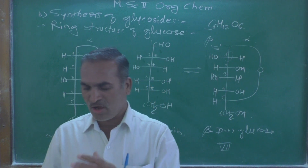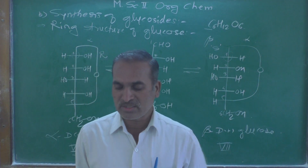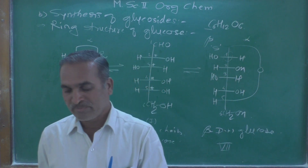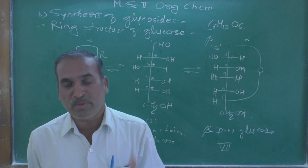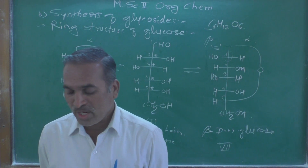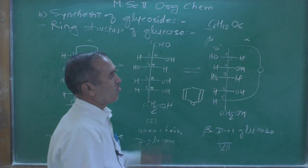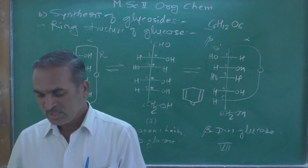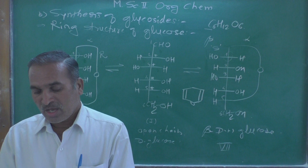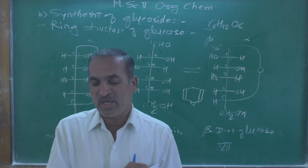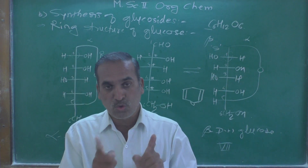The ring of the cyclic structure of glucose contains five carbons and one oxygen, thus it is a six-membered ring called the pyranose structure, in analogy with the six-membered heterocyclic compound pyrone. Therefore glucose is also called glucopyranose.